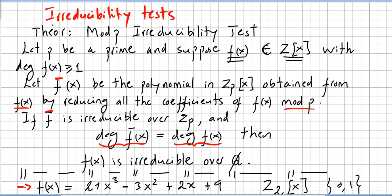We got into this mod p irreducibility test because this can work for polynomials of degree over 2, 3, 4, or 5. So far, we only had tests for degree 2 and 3. So this works for higher polynomials or polynomials of higher degree.